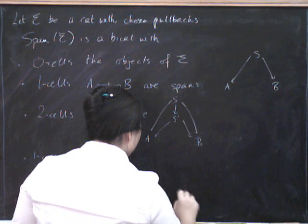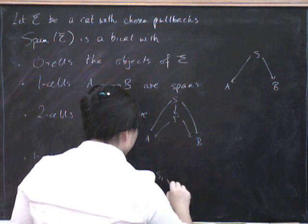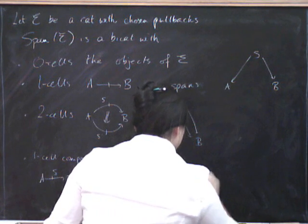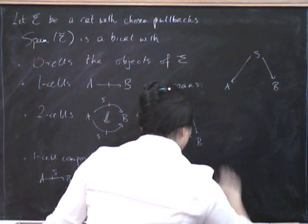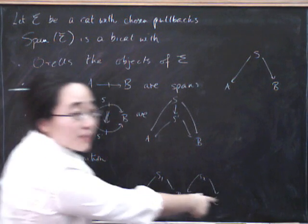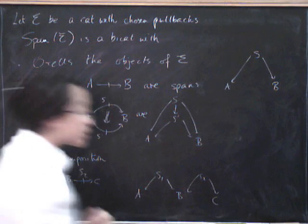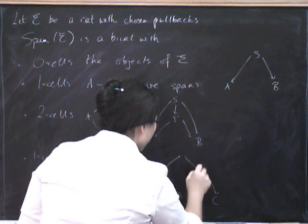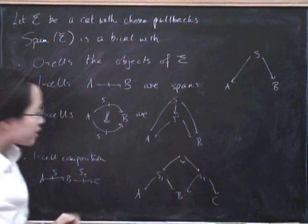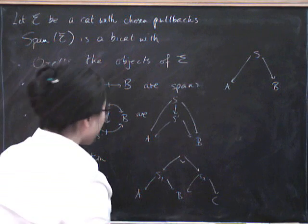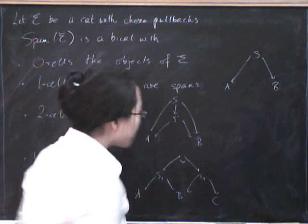So let's see what we've got. We've got a span from A to B and we've got a span from B to C. So what could we possibly do to make a span from A to C? Well, we could take the pullback. We have a chosen pullback and that's going to be the composite of those two spans. So now we can look at whether this is associative or not.